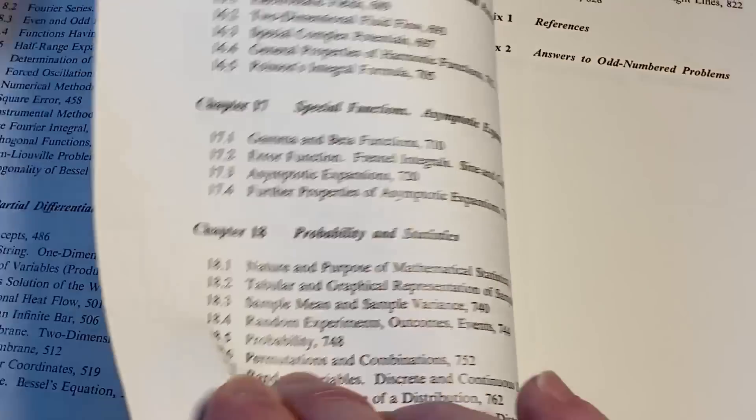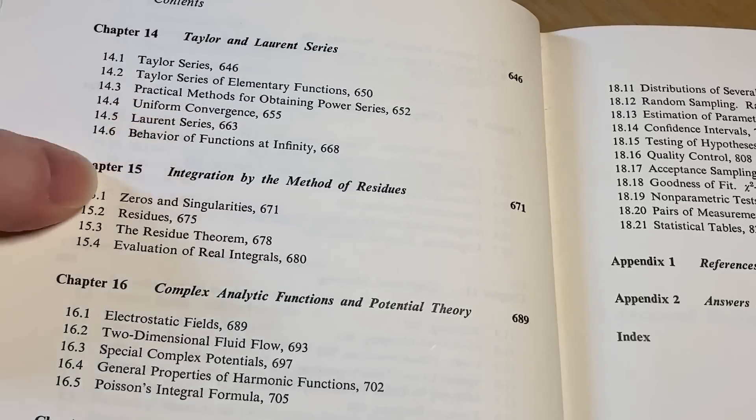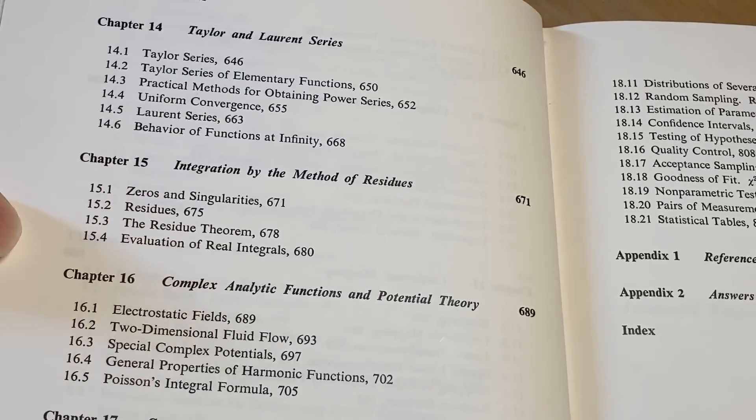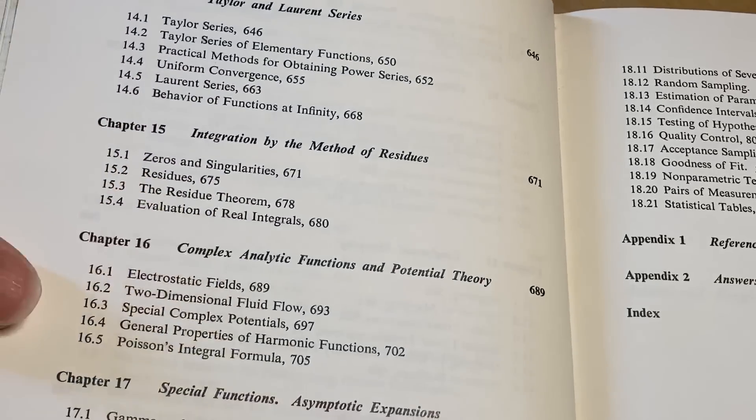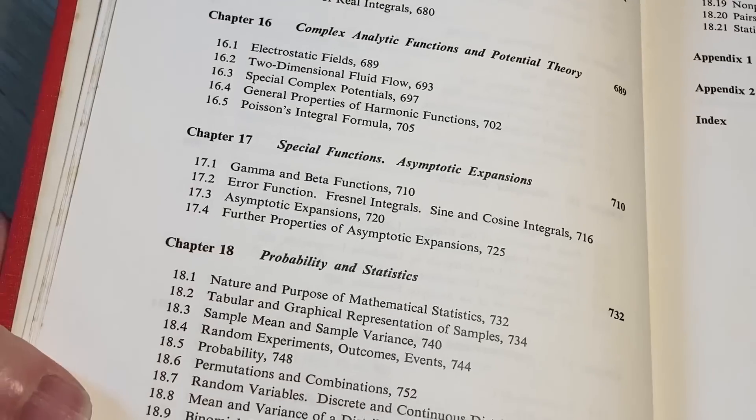This is complex analysis type stuff: conformal mappings, complex integrals. And then we have sequences and series—that's like calc 2 stuff. Taylor and Laurent series, we've got a mix here. This is complex variable stuff, integration by the method of residues, complex analysis.